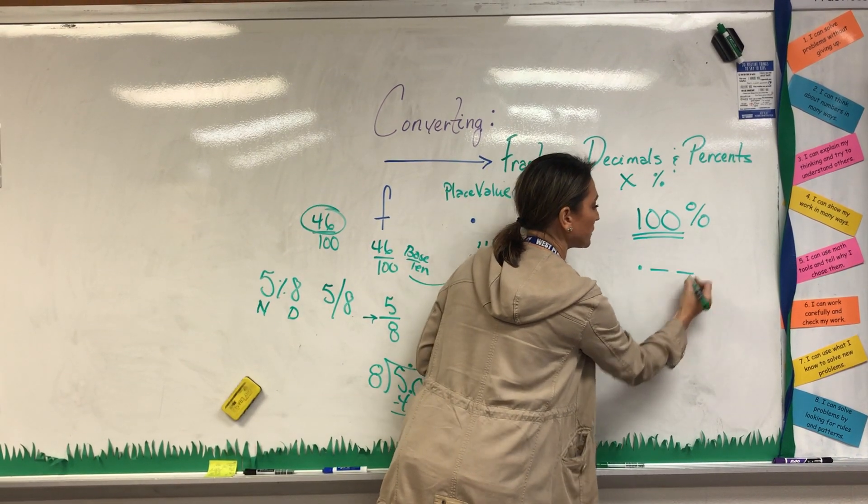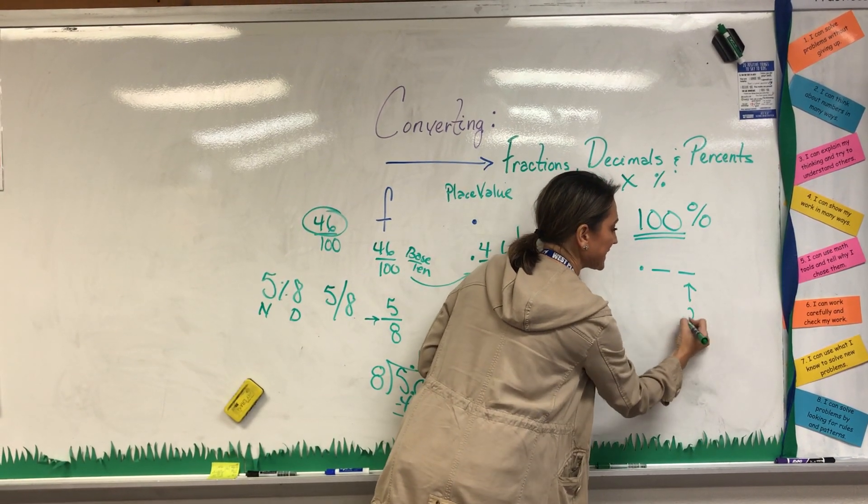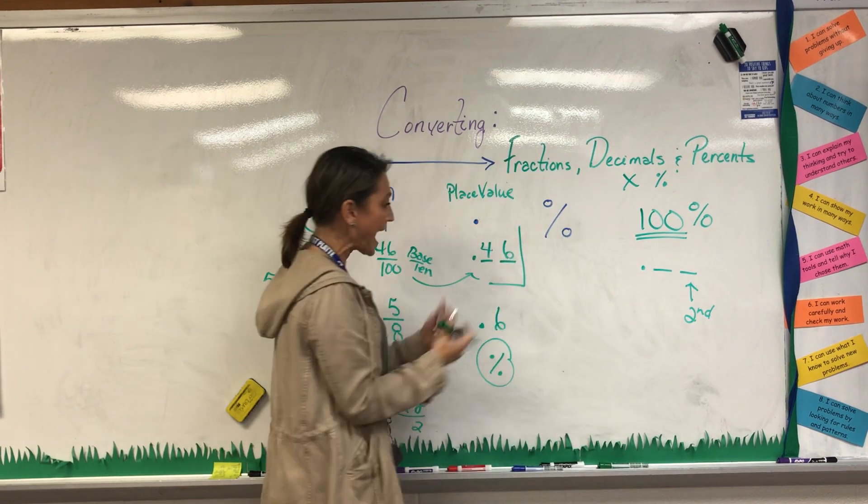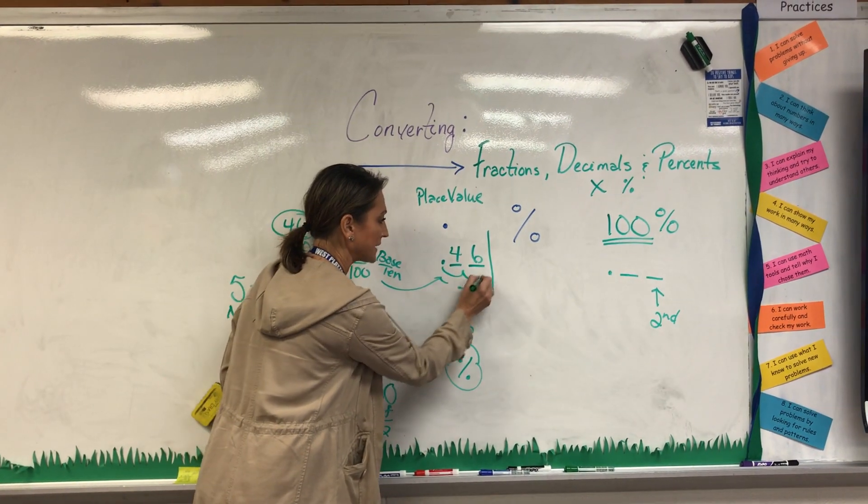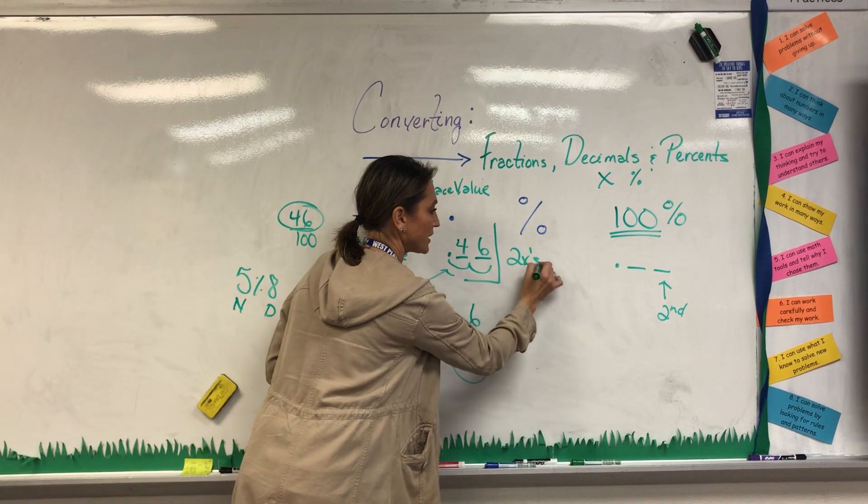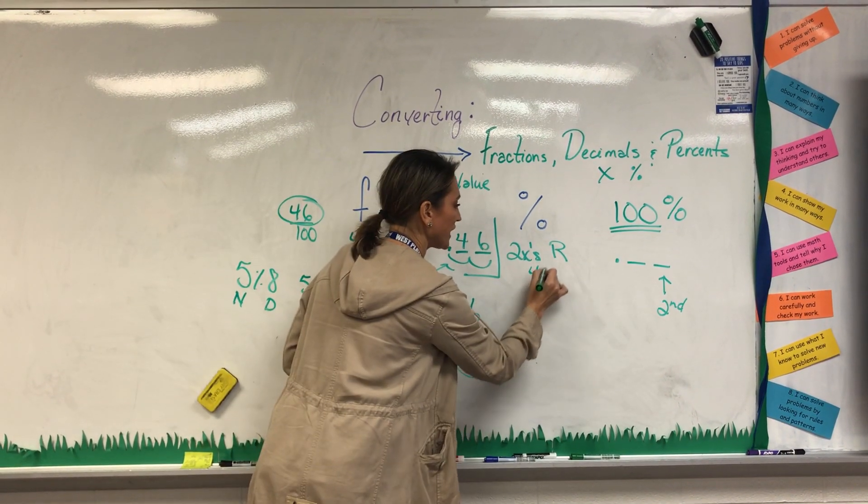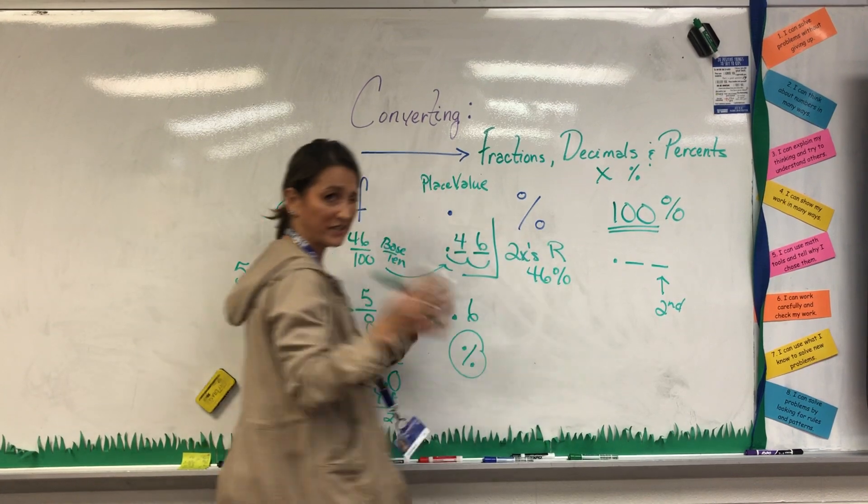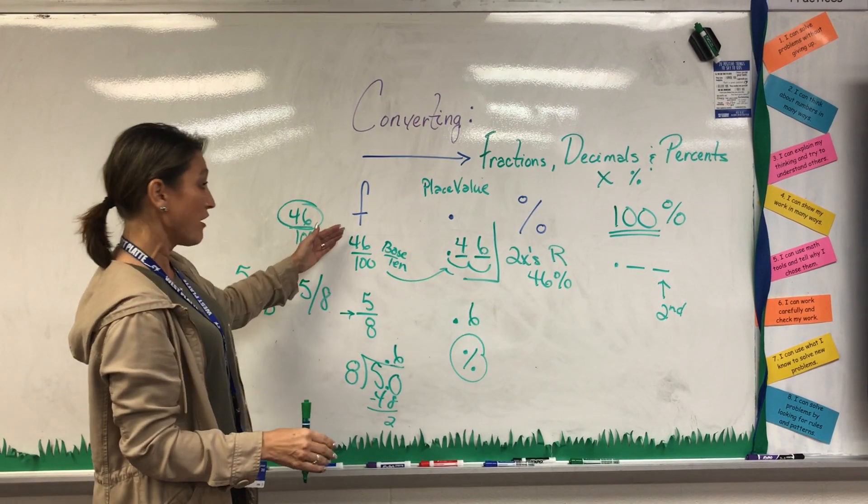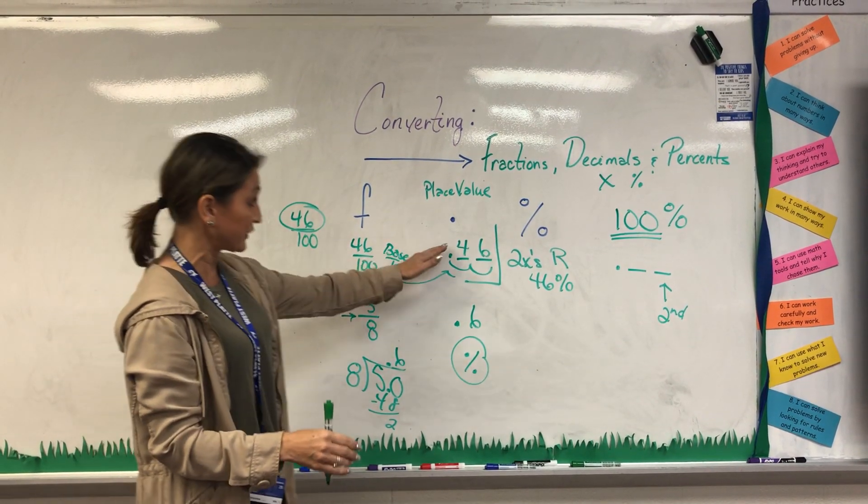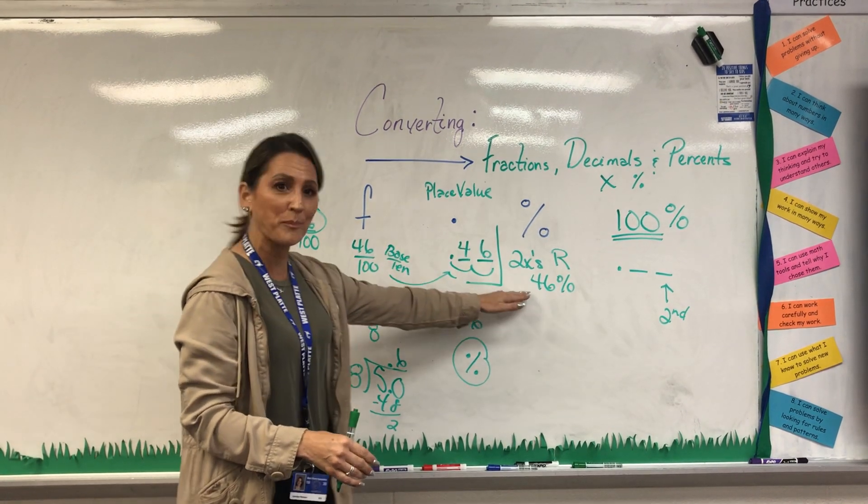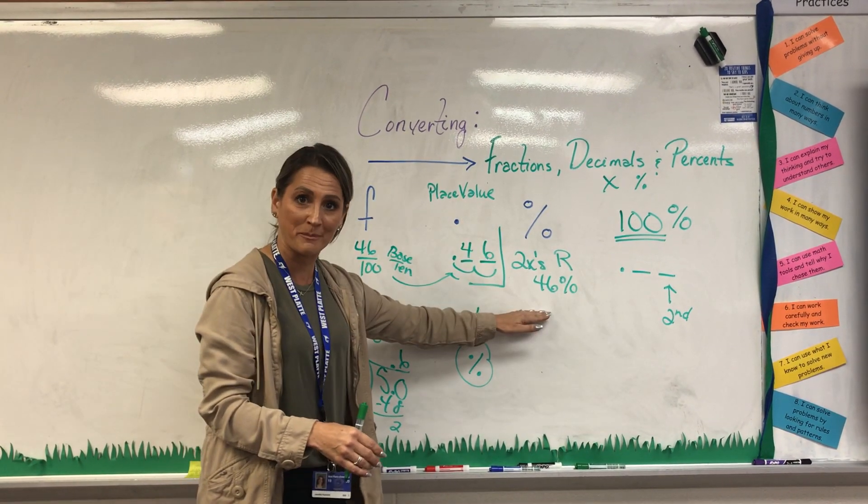knowing that the decimal spot for hundreds is in the second position, I can simply move the decimal two spots two times to the right. And that 0.46 turns into 46%. Now kids get that fairly easy because 0.46 is 46 hundredths. So I probably made 46% on my test.